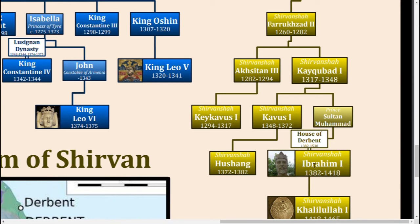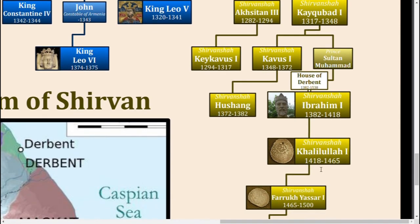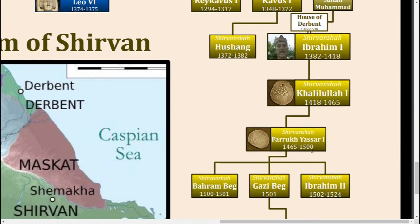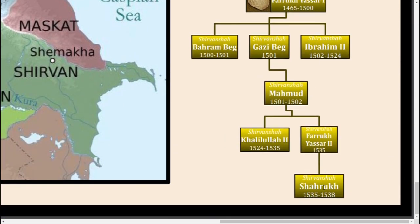Ibrahim also boosted Shirvan's economy and was able to make Shirvan about the size it was under the reign of Fari Burz. Unfortunately, this good fortune only lasted so long, and by 1500, under the newly crowned Safavid dynasty founder, Shirvan's ruler Faruqi Asara the First was killed and Shirvan had to swear Safavid suzerainty. After 40 more years, with the last ruler being Shahruh, Shirvan was fully absorbed into Persia.